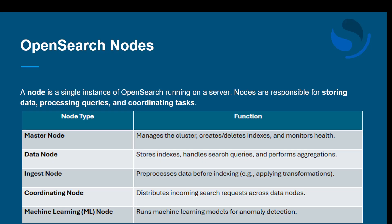In simple terms, a node is just a portion of the data. If one node encounters an issue, other nodes can continue to serve requests, which helps maintain system reliability. So master node, data node, ingest node, and coordinating node each have their own functions and work together for processing data and coordinating all tasks.